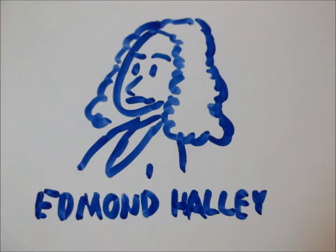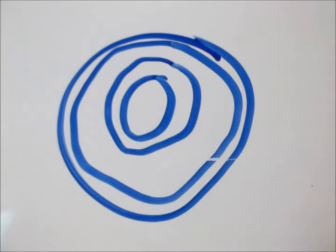In 1692, Edmund Haley hypothesized that the Earth is mostly hollow, but some of that space is filled with concentric circles.